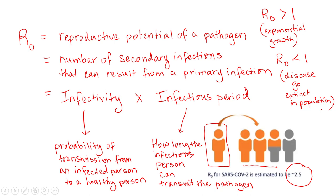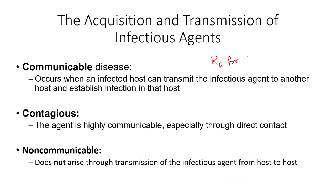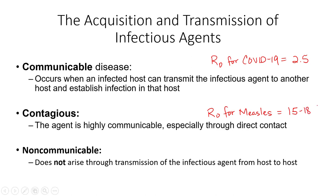To put this in context: R naught for COVID-19 is approximately 2.5, while R naught for measles is actually between 15 to 18. That means one person with measles can transmit the virus to between 15 to 18 healthy people and infect them on average.